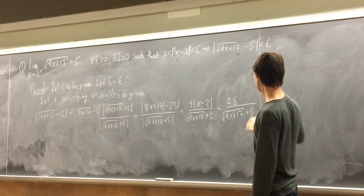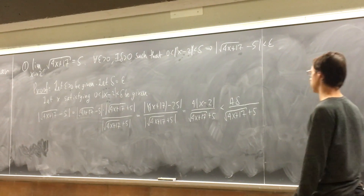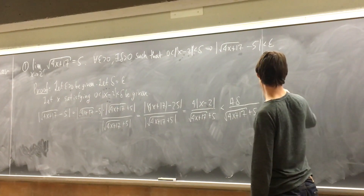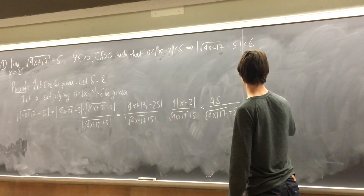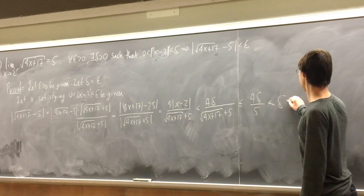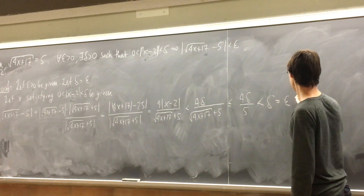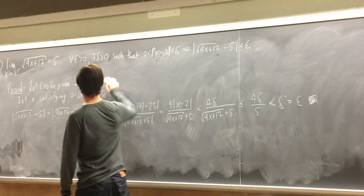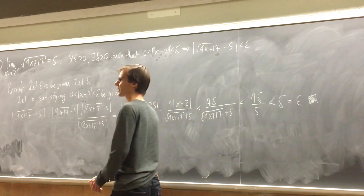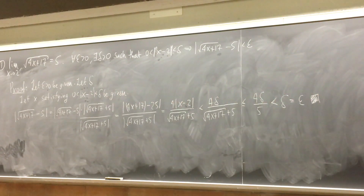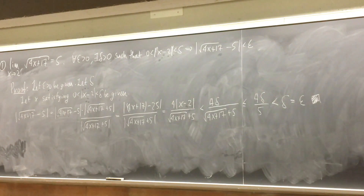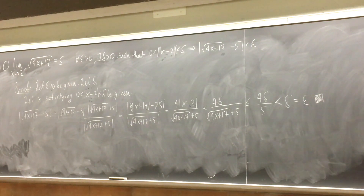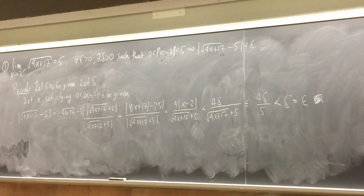This is still 4·delta over 5, which is less than delta — equal to epsilon. The proof works and now we let delta equal epsilon. But there's a subtle point: when we remove the one-sided restriction, x can now be less than 2, so there is a maximum size for delta. The delta window cannot cross outside the domain of the function.